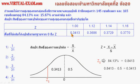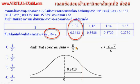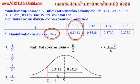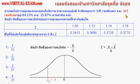จากตารางที่แสดงความสัมพันธ์ระหว่างค่า Z กับพื้นที่ใต้เส้นโค้งจาก 0 ถึง Z พื้นที่ 0.3413 จะมีค่า Z เท่ากับ 1 เนื่องจากรูปมีลักษณะสมมาตร พื้นที่ทางขวาเท่ากับพื้นที่ทางซ้าย ดังนั้นถ้าวัดมาทางซ้ายจะได้ค่า Z เท่ากับ -1 จากข้อมูลในตารางที่โจทย์กำหนดให้ จะได้ค่า Z1 เท่ากับ -1